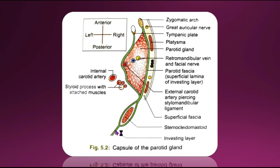Looking at the investing layer, the investing layer of the deep cervical fascia forms a capsule for the gland. The structure shown in green is the investing layer, which is supplied by the greater auricular nerve shown in yellow. This fascia splits into two to enclose the parotid gland.